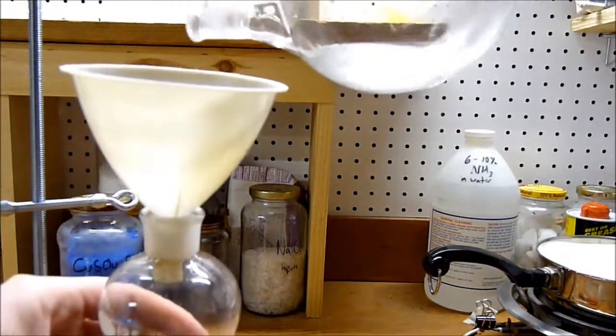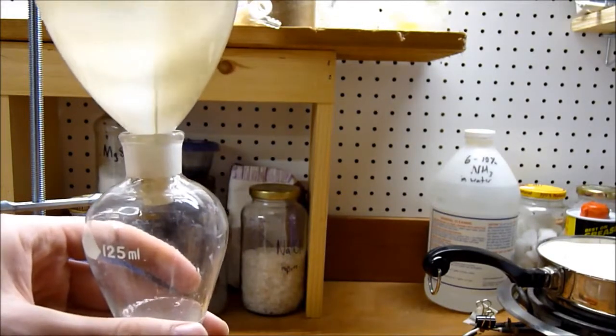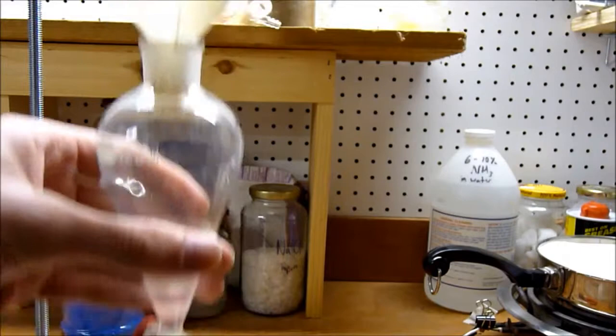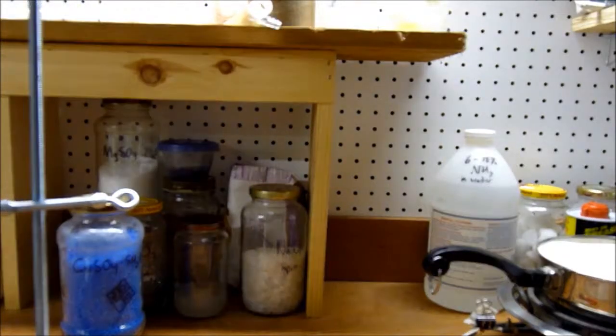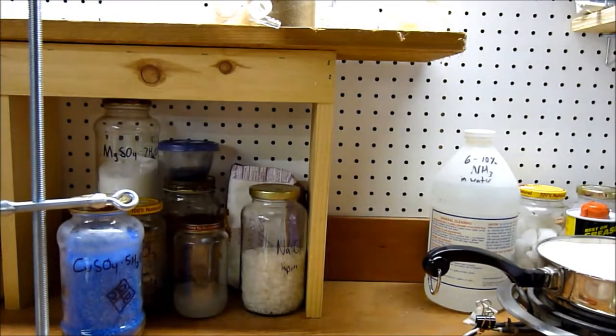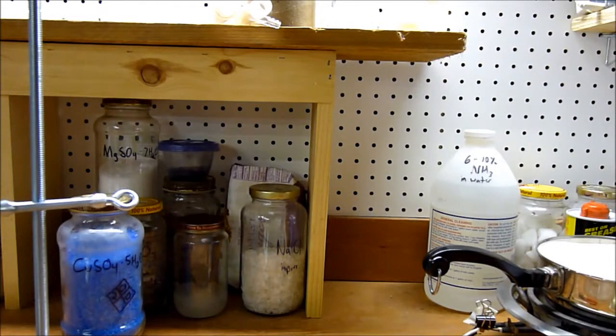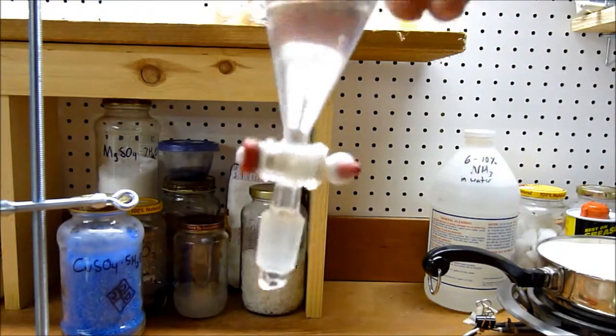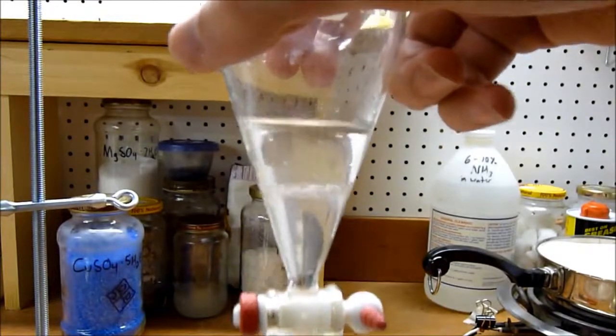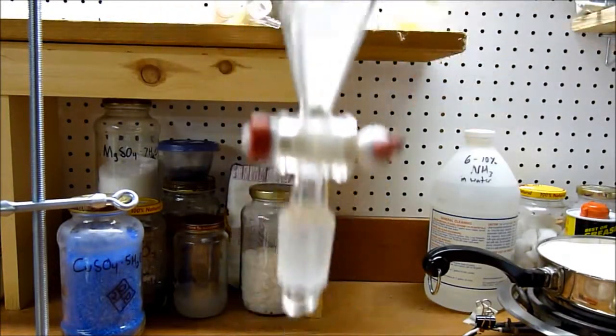I'm going to get the bottom phase out and put it in my addition funnel. You can clearly see the two phases, the bottom one being chloroform. I'm going to rinse this flask out a little bit with some cold water, maybe a couple milliliters just to get any remainder out.